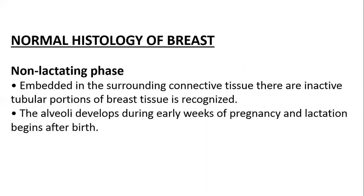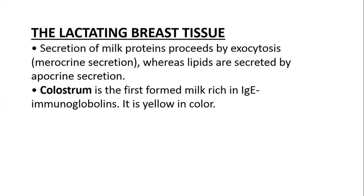Moving forward to histology, breast tissue can be divided into two phases: a non-lactating phase and a lactating phase. The lactating phase is after birth, when the breast tissue of the mother starts secreting milk by exocytosis. The very first milk secreted right after birth is called colostrum. It is good for the baby's immune system, is yellow in color, and contains IgA immunoglobulins.